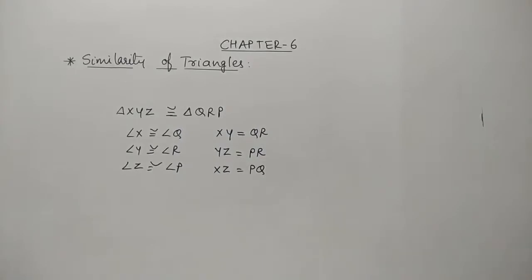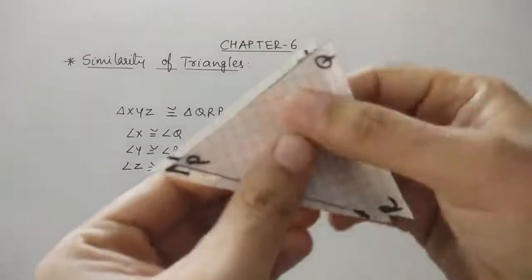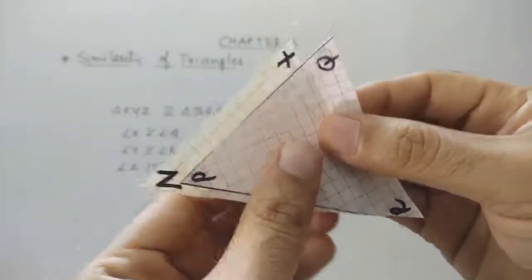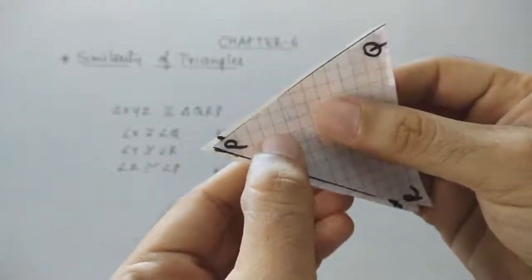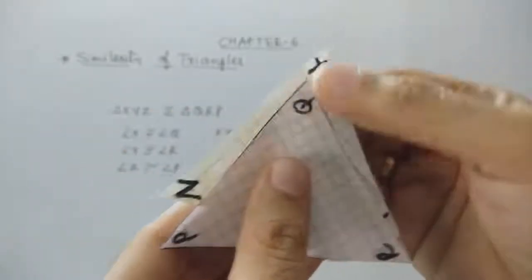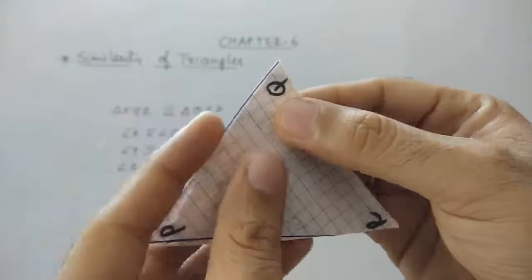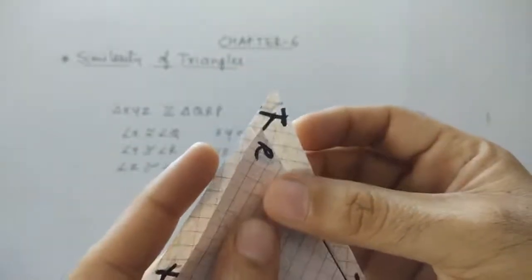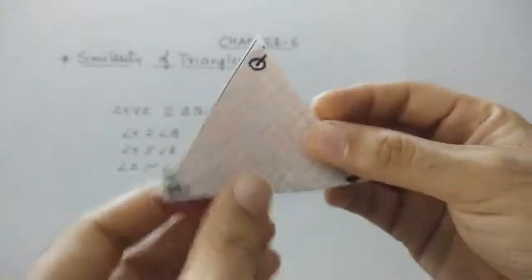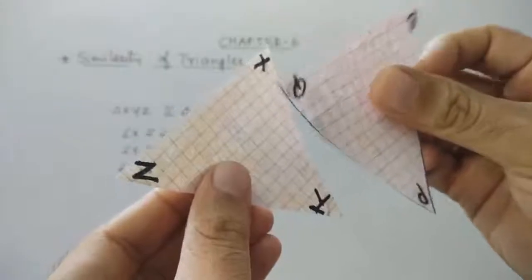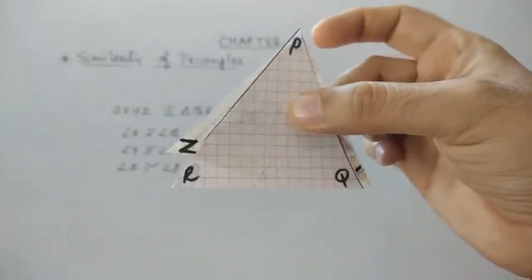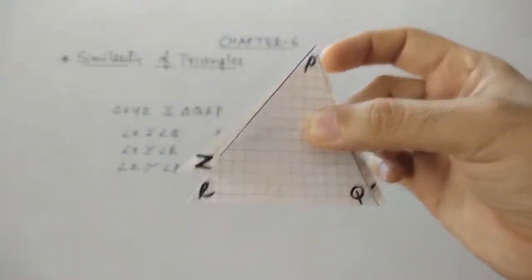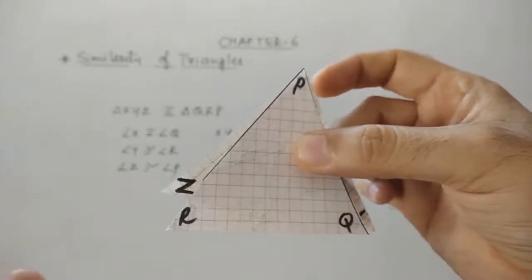Let us understand again with the craft which I have explained here — what are the corresponding angles and corresponding sides. Angle Z is corresponding with angle P because their measurements are equal. Similarly, angle X and Q are the same, and Y and R are equal. Now if I want to change this — can I say that X is same as something else?